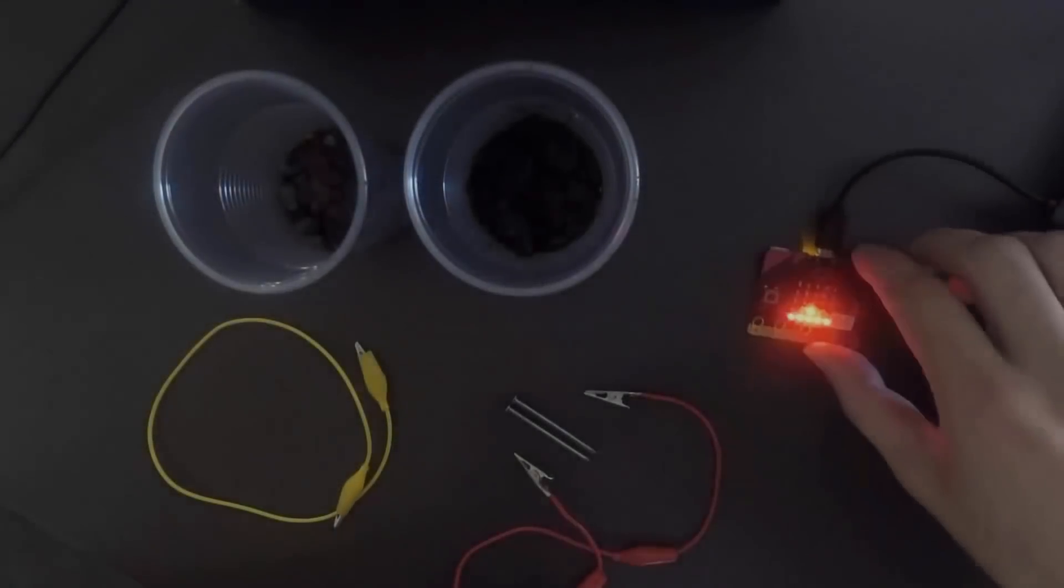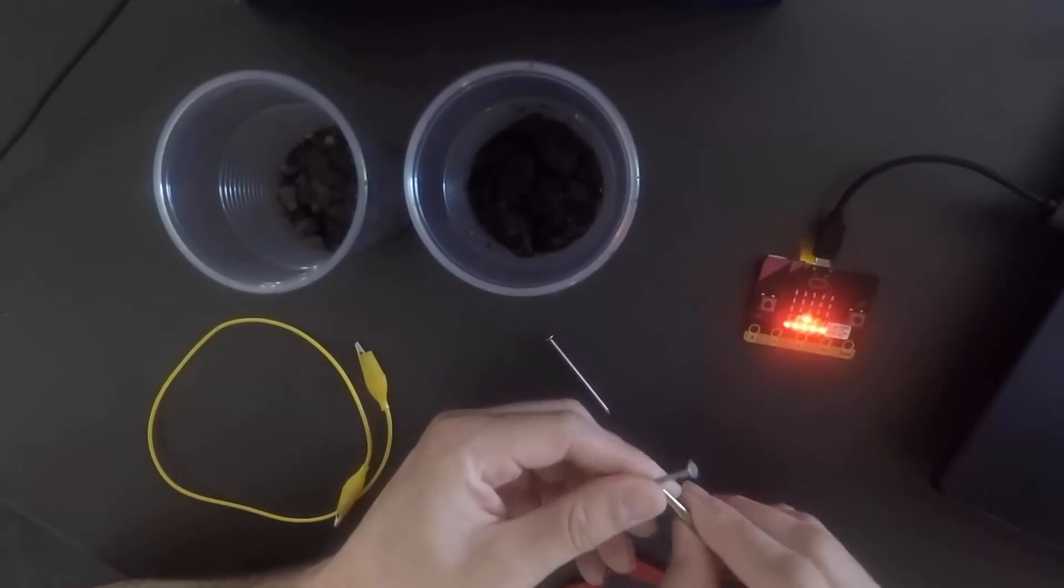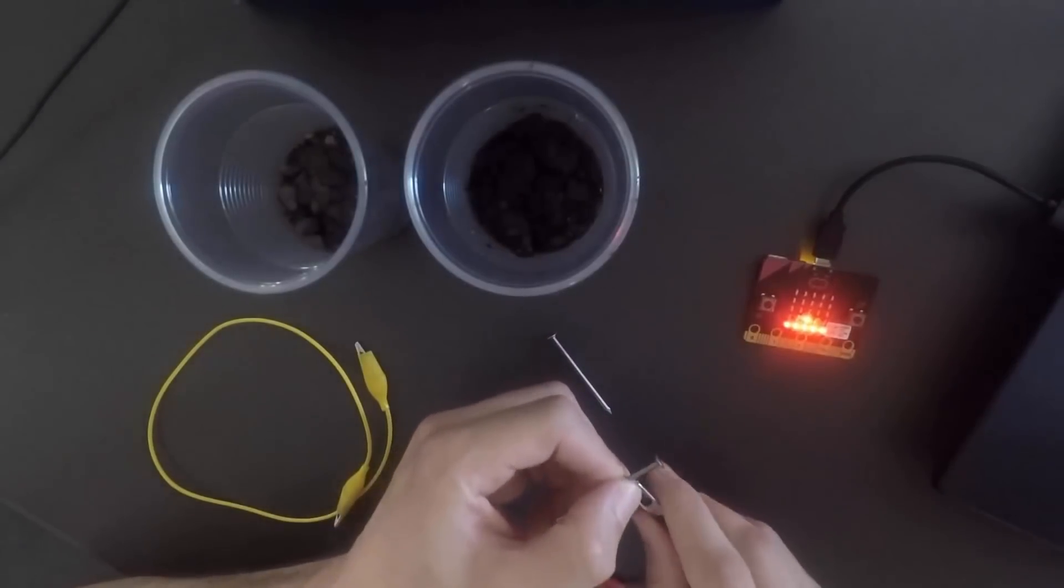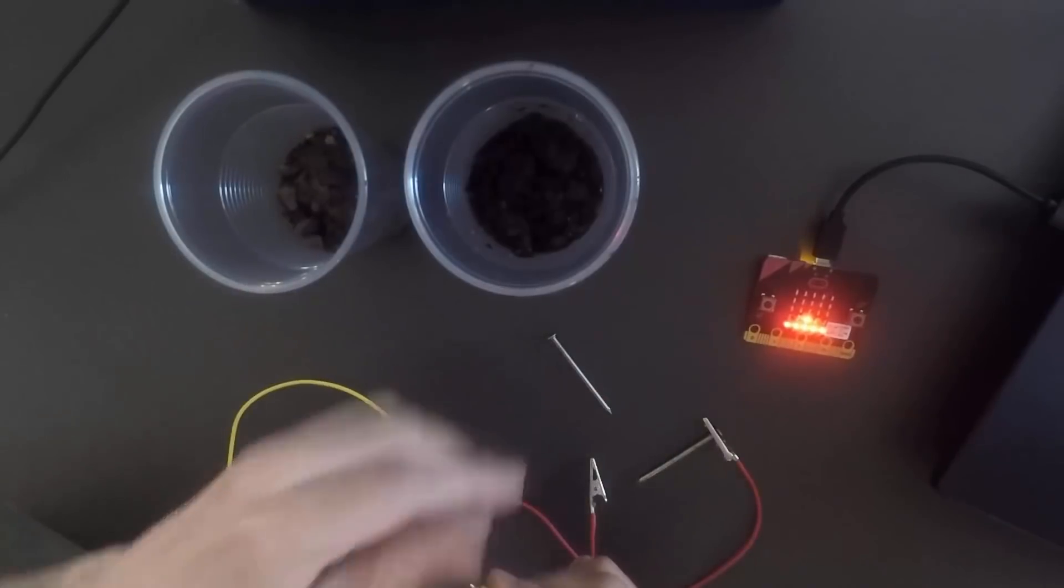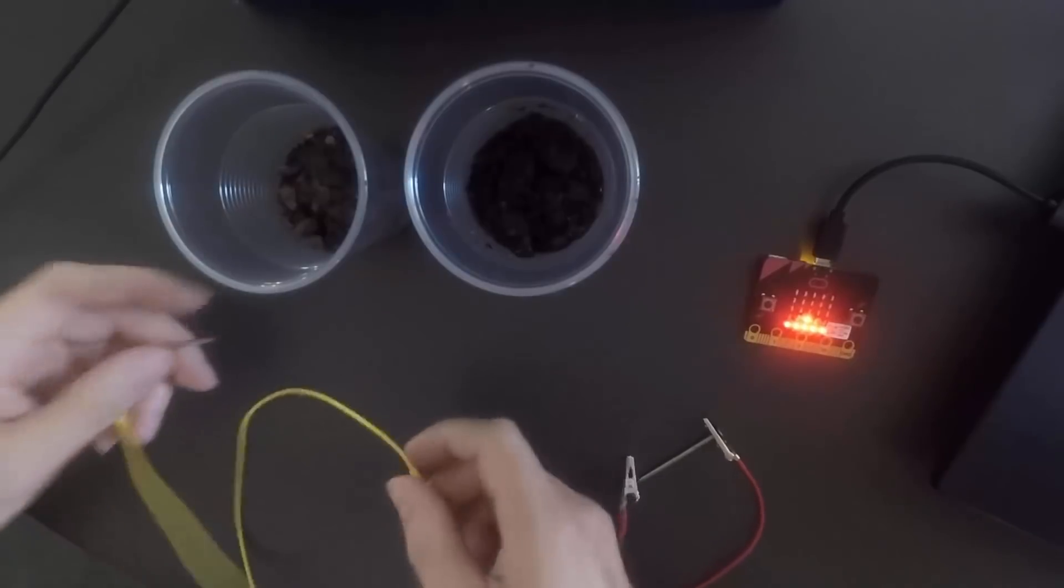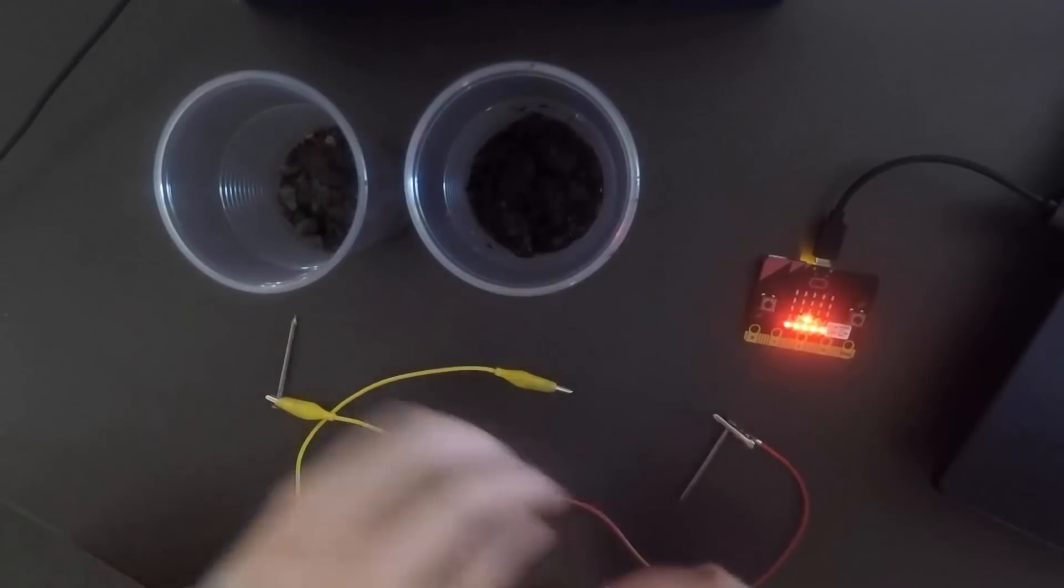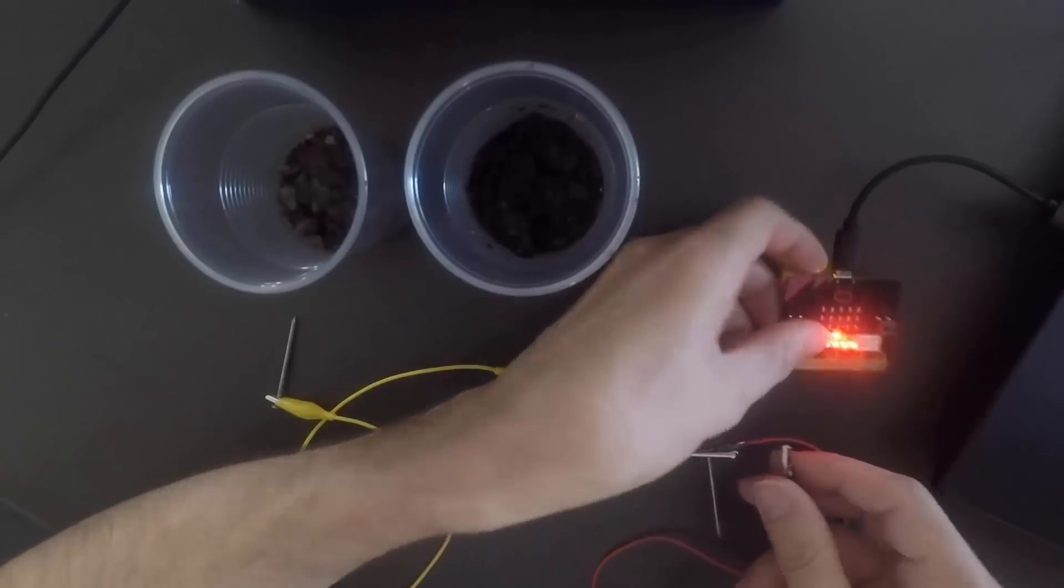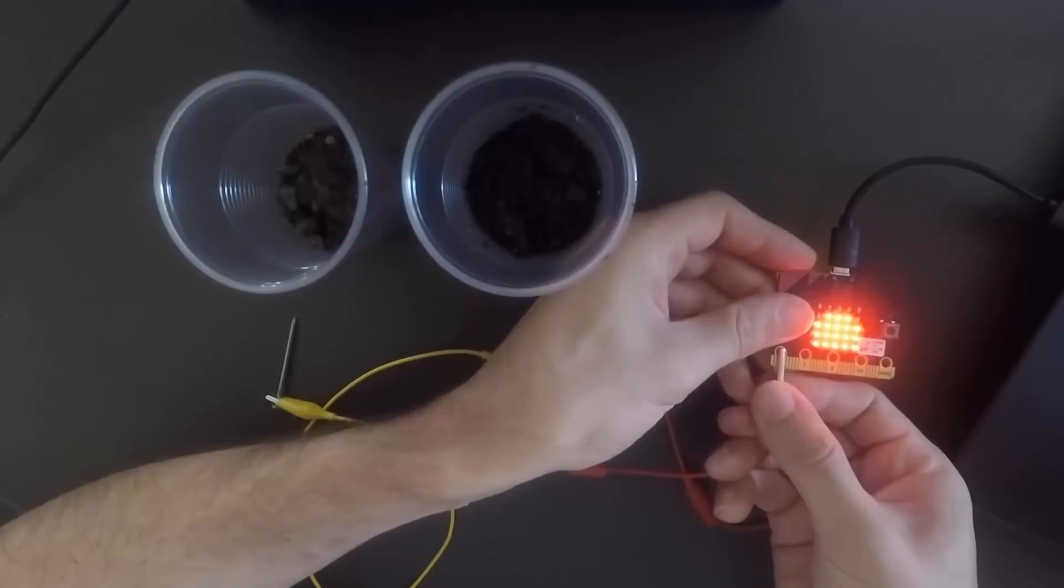Let's have a look at putting it all together. We've copied the code over. The first thing we need to do is get our crocodile clips and set them up with our makeshift probes. We're using nails here and we're attaching one end of the crocodile clips to the nails. If you don't have nails, you can easily use wires and wrap that around the sections of the micro:bit.